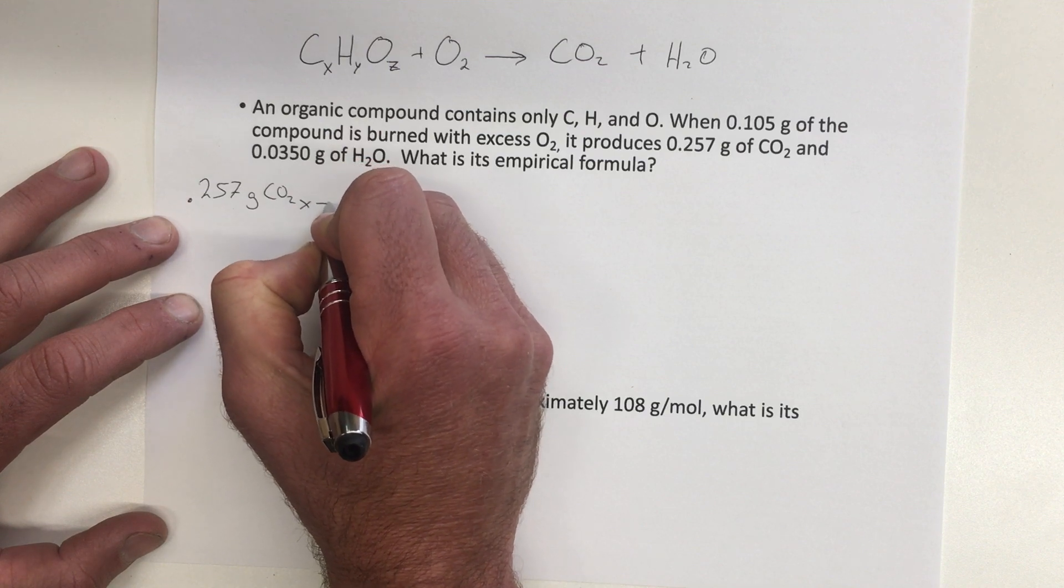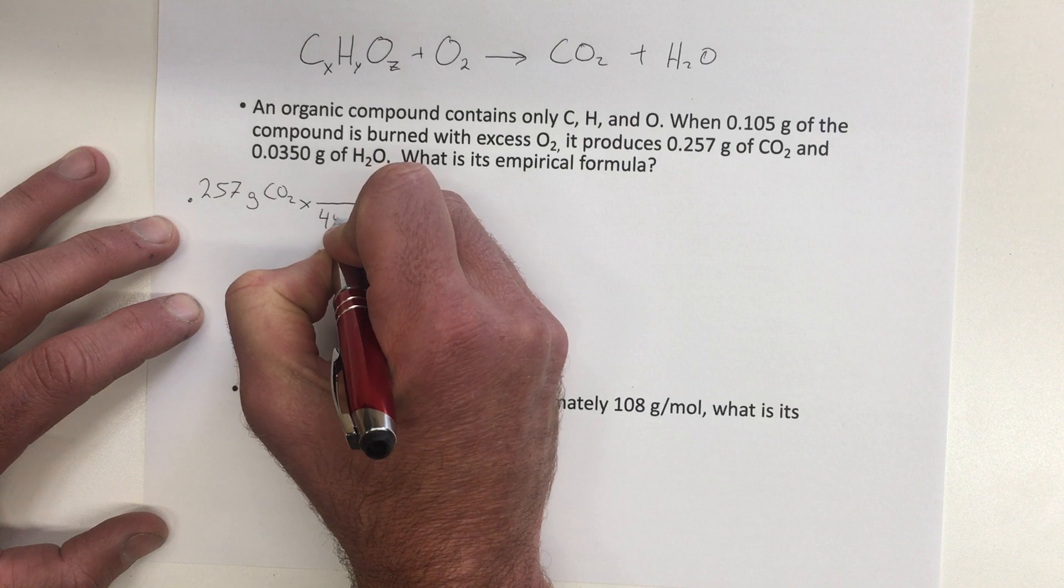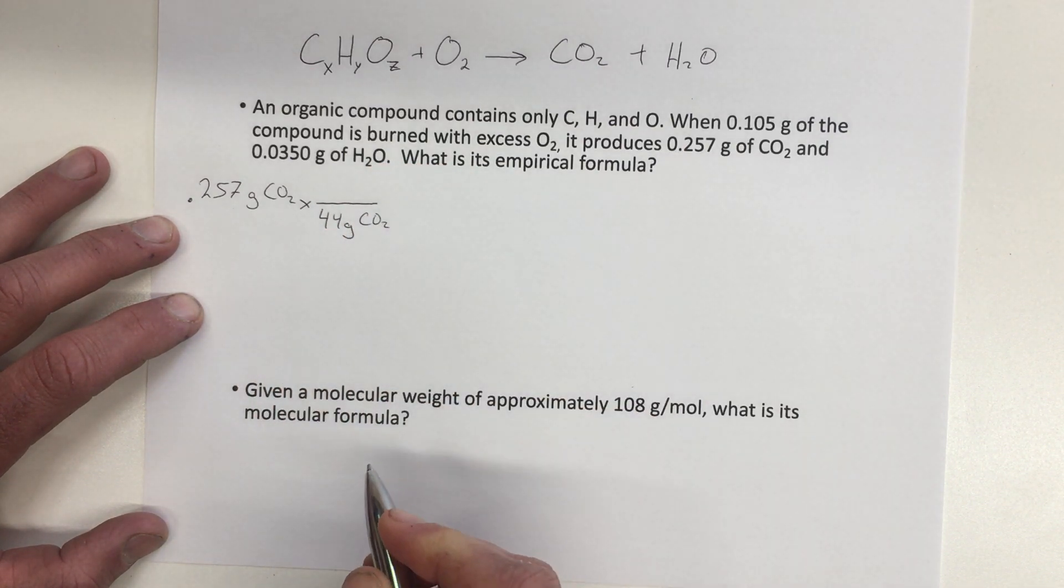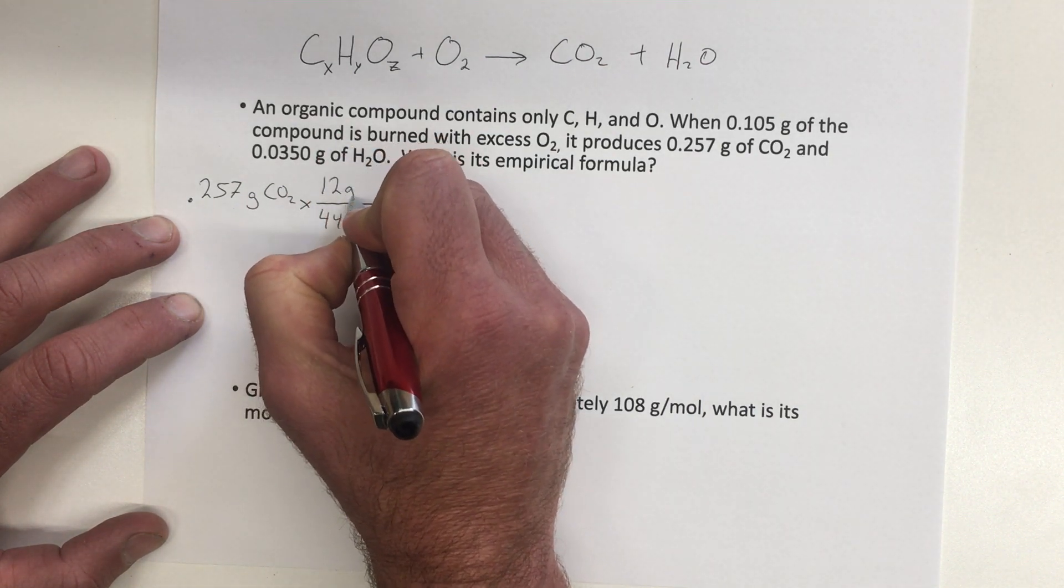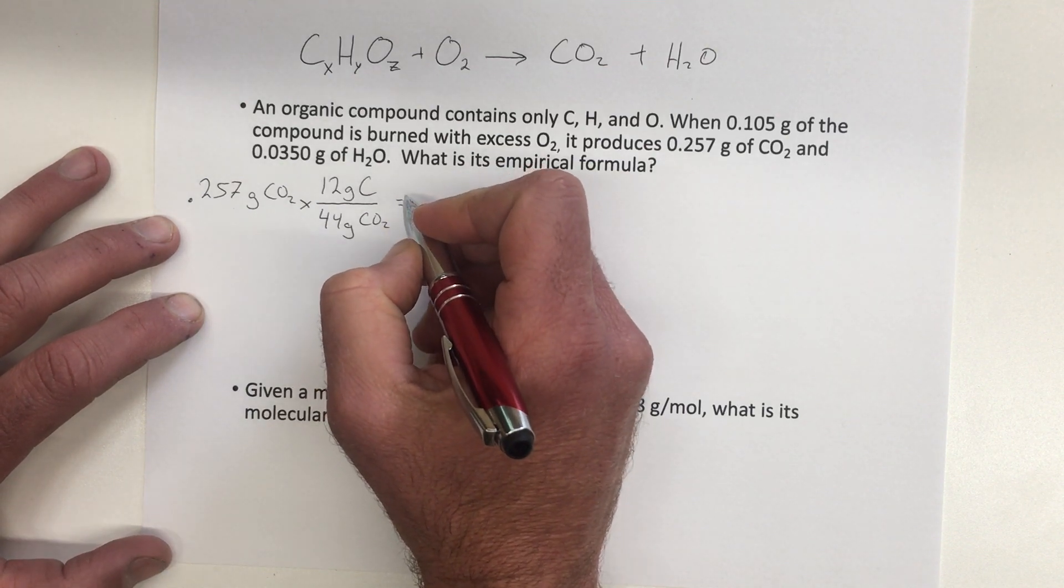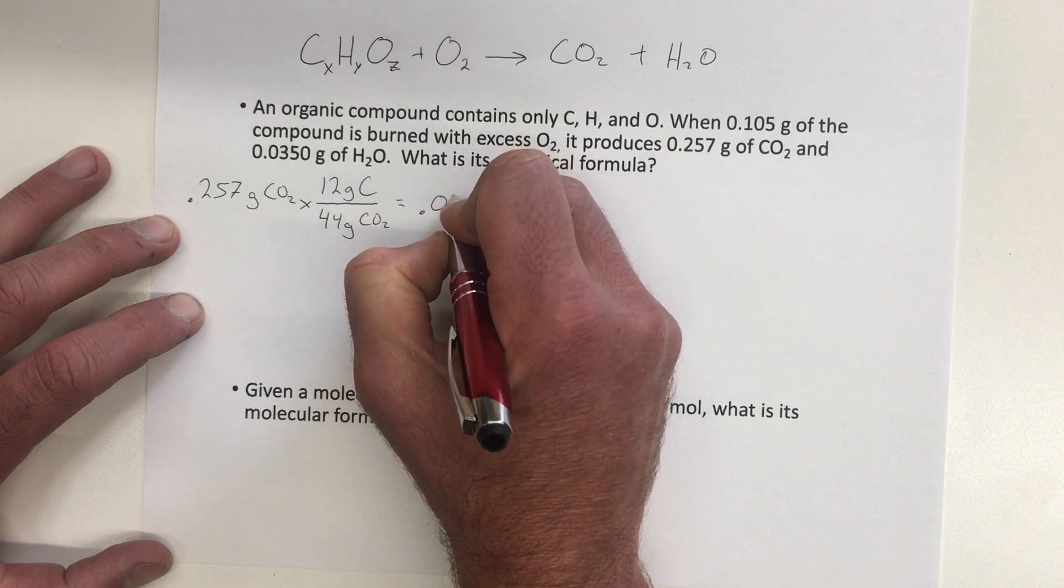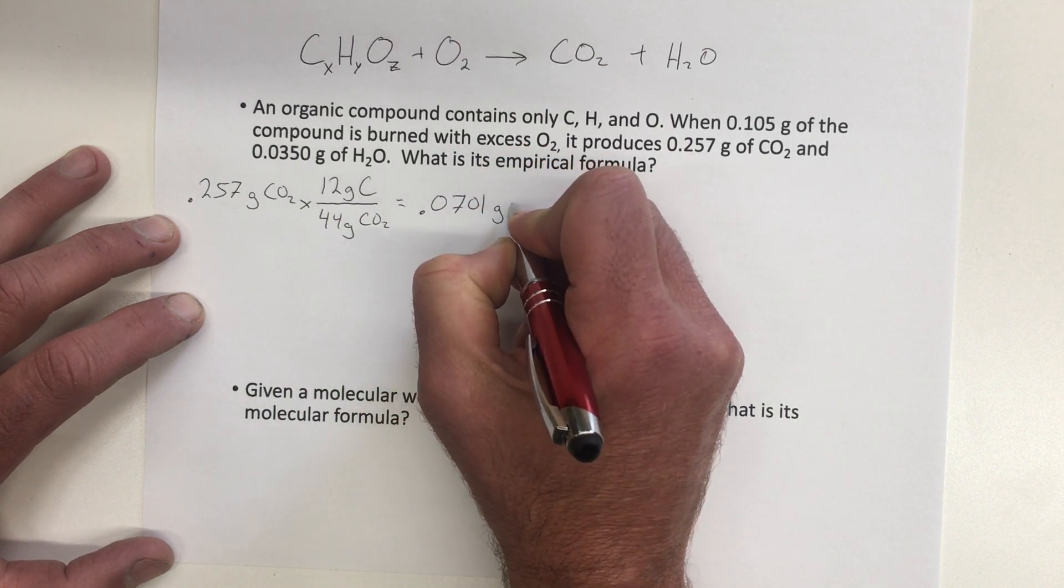And so we're going to multiply that by the molar mass of carbon dioxide is 44 grams of CO2 per mole. And in that mole of carbon dioxide, 12 grams are coming from carbon. And so that tells us that in our original reactant, and then also in our product, we had 0.0701 grams of carbon.